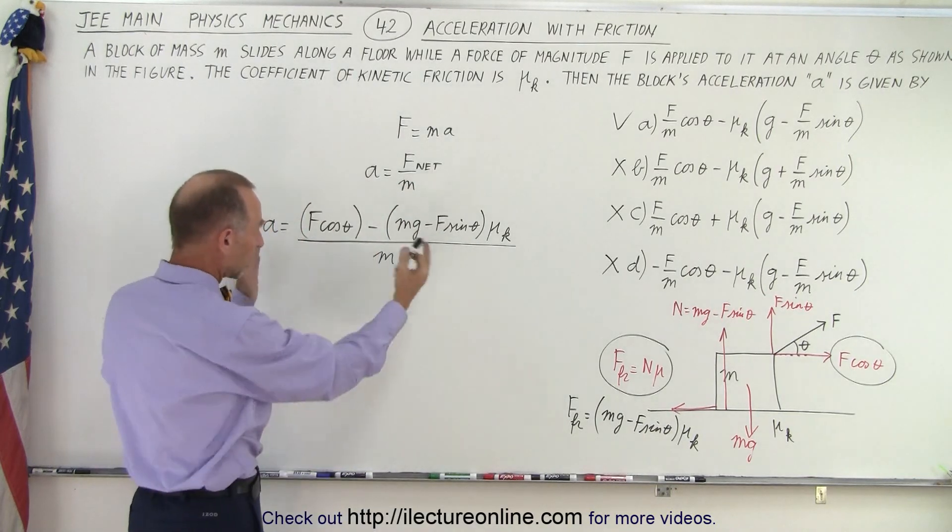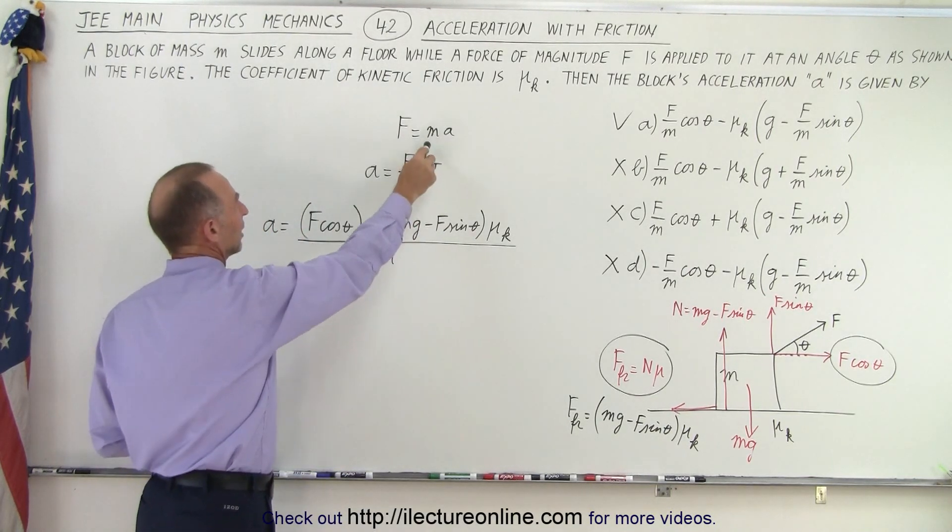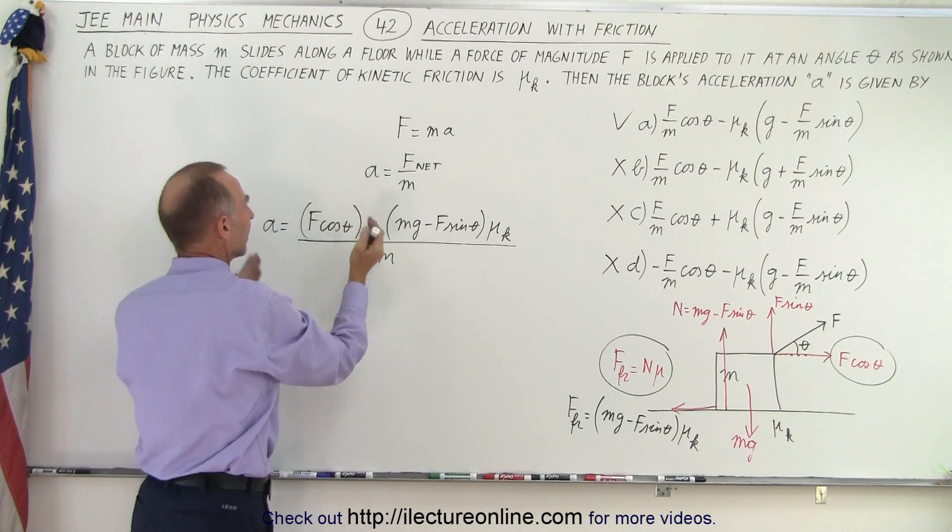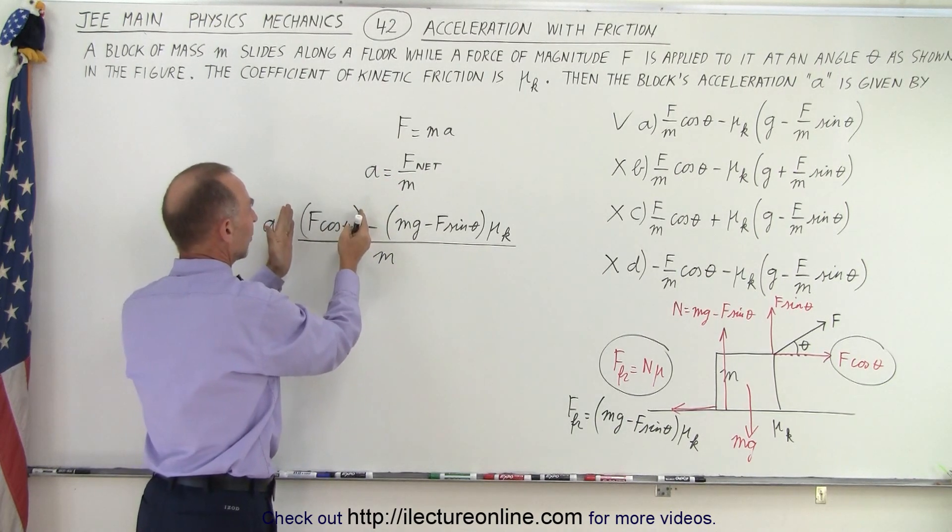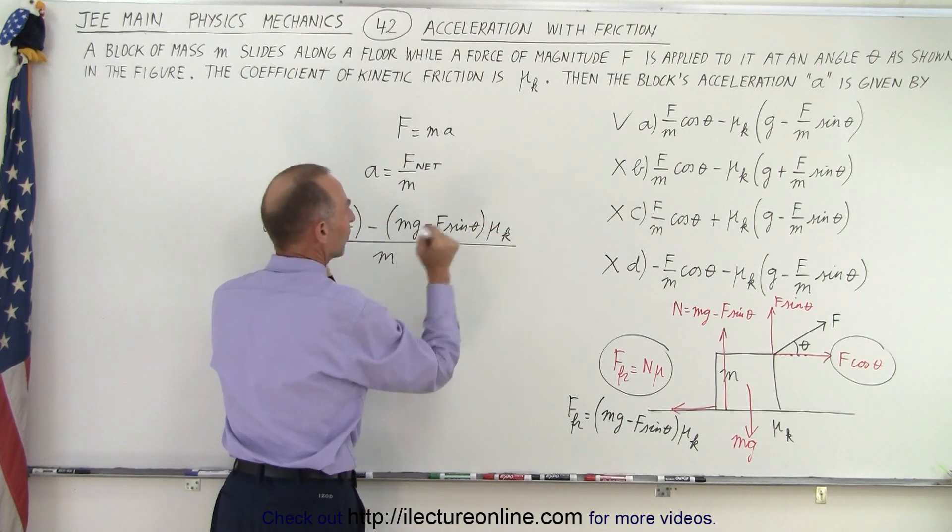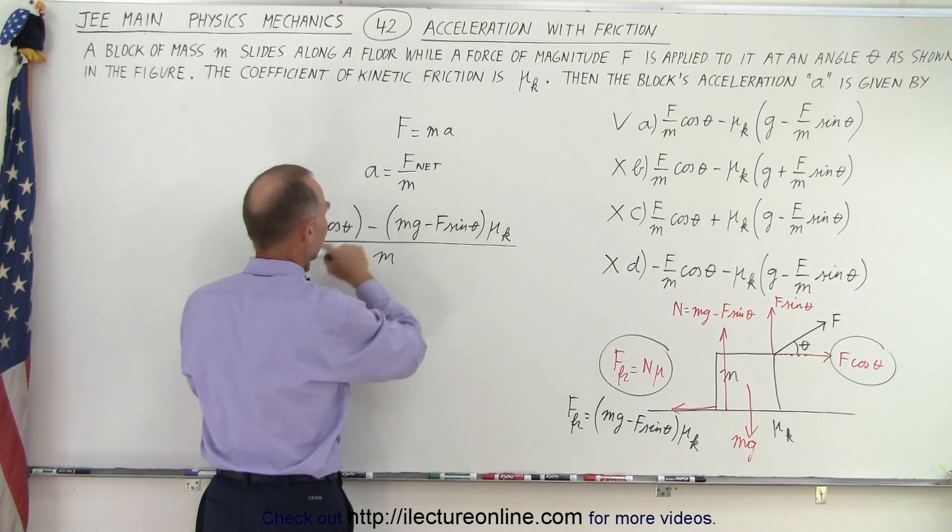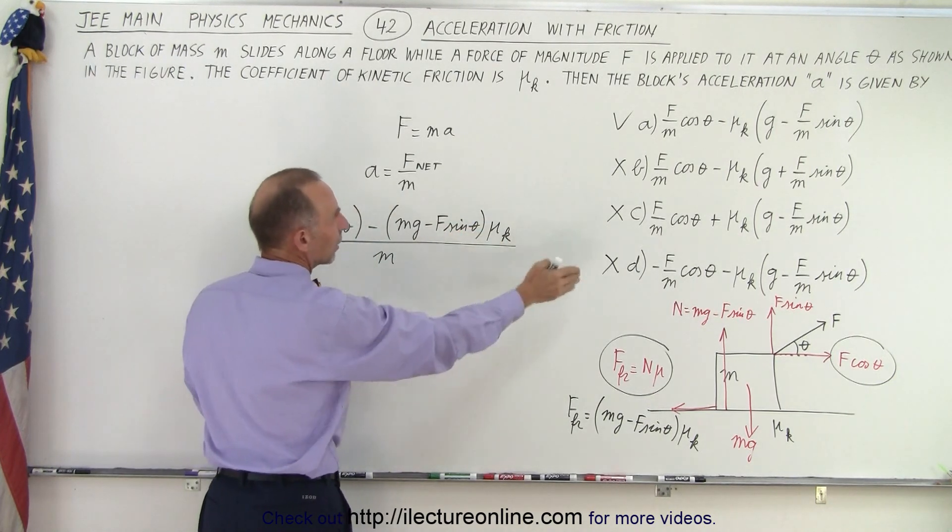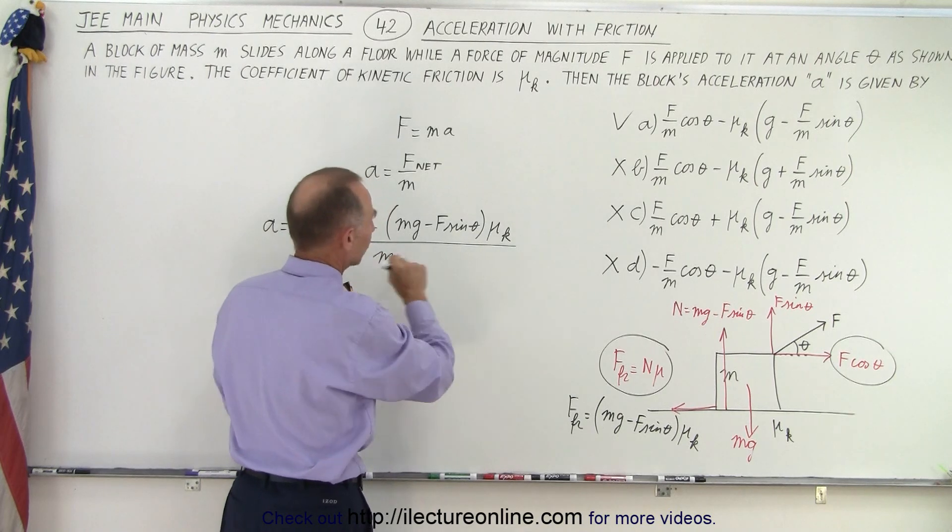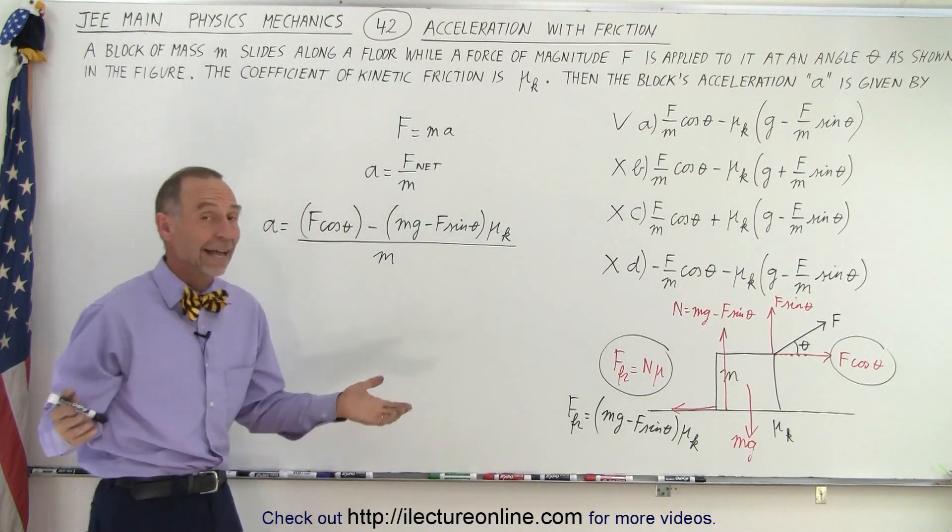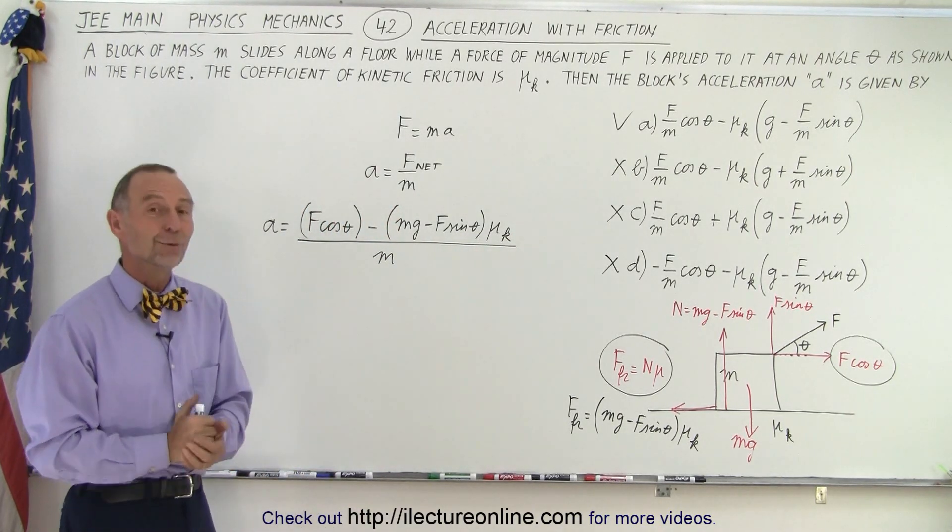So it was just simply working out the problem starting with F equals ma, solving for a, then the net force is the force aiding acceleration minus the force opposing the acceleration, which is the normal force times μ, and divide everything by m, and then picking out the terms one by one to make sure they have the correct sign. And that is the best way to do this problem.